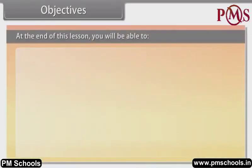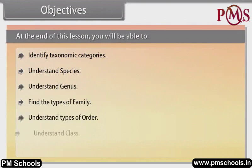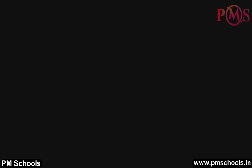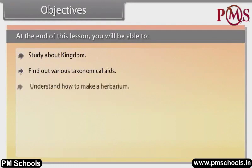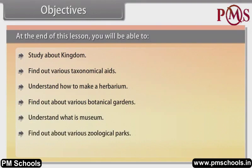At the end of this lesson you will be able to: identify taxonomy categories, understand species, understand genus, find the types of family, understand types of order, understand class, understand phylum, study about kingdom, find out various taxonomical aids, understand how to make a herbarium, find out about various botanical gardens, understand what a museum is, find out about various zoological parks, and understand what a key is.